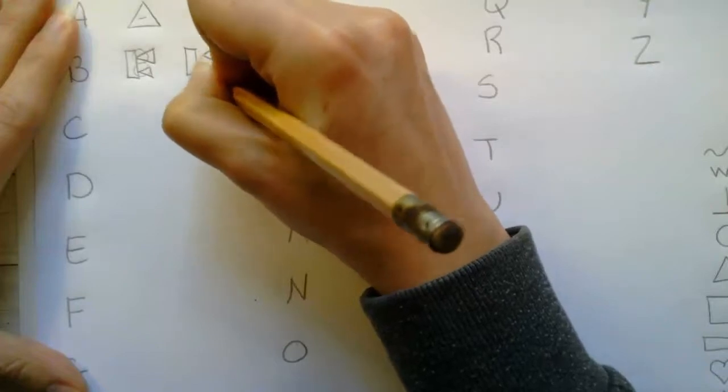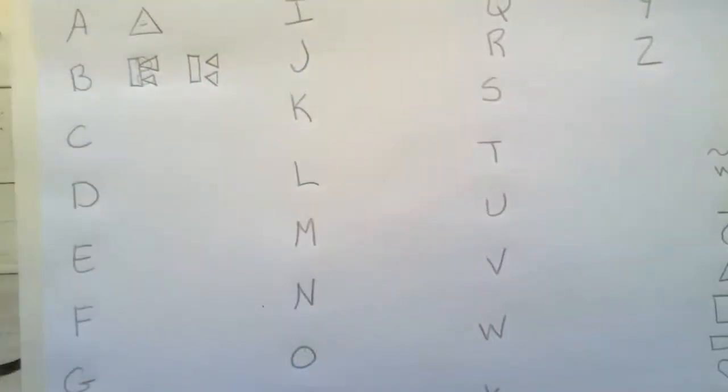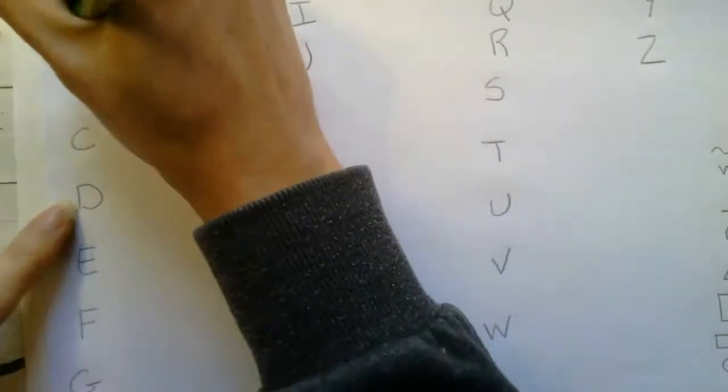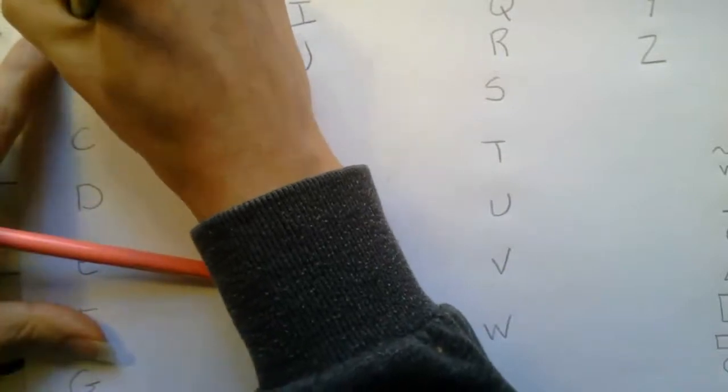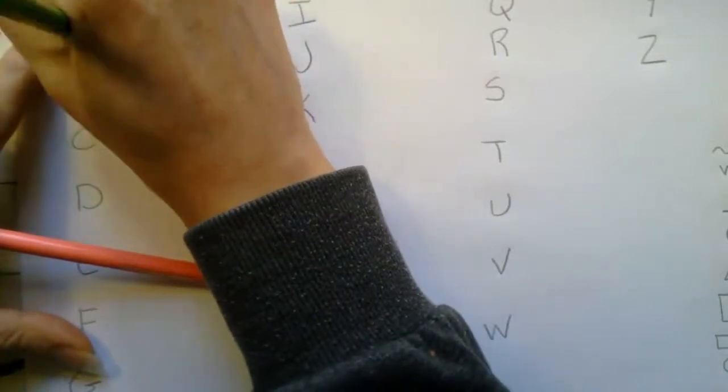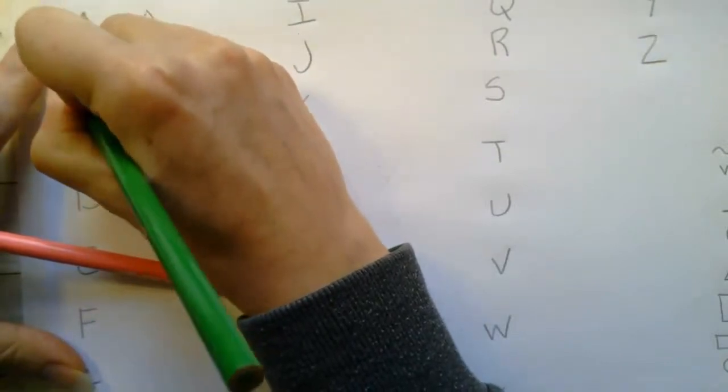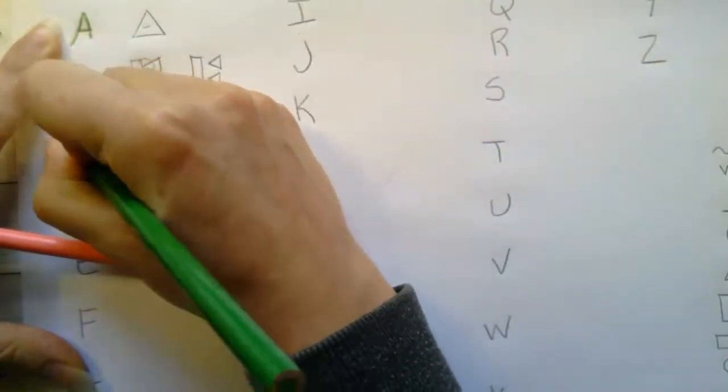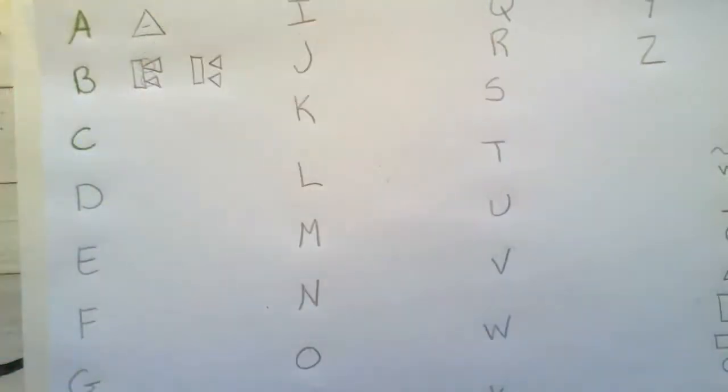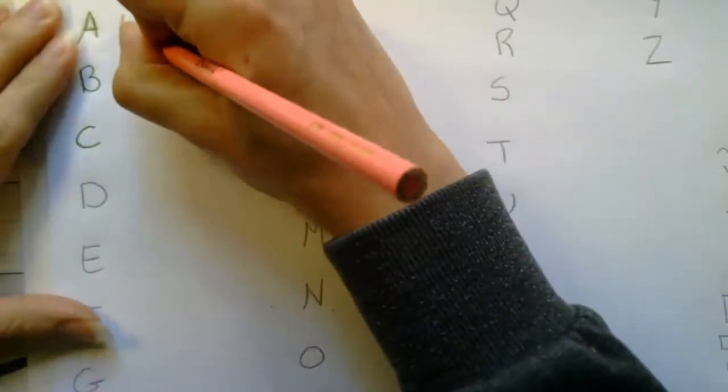You're going to go back in with your colored pencils. Pick one color to do all of the letters in the English alphabet. You're just going to trace over top of all of these. Then I'm going to go back in with my other color and trace over the new alphabet.